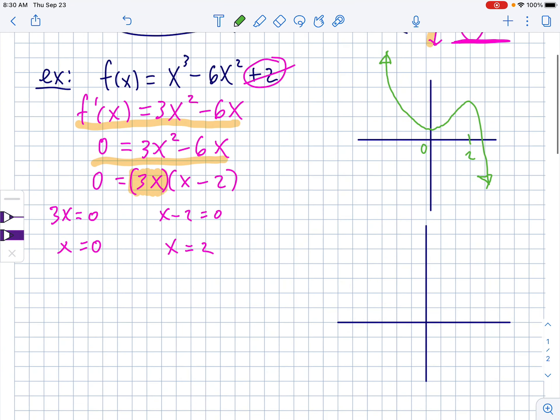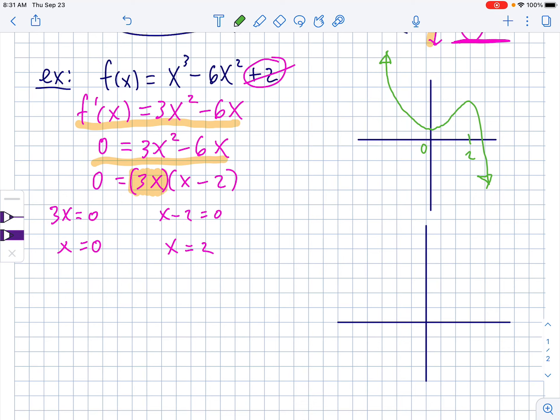So, it could do that, or instead of coming down from the top and then hitting a horizontal tangent, it could come up from the bottom and then flatten out right there and then turn around and then turn around again at 2.